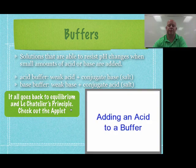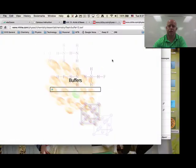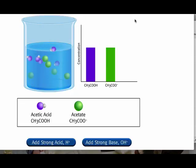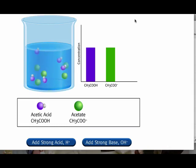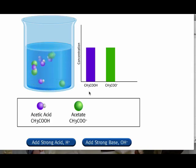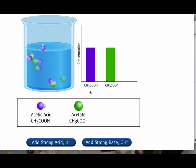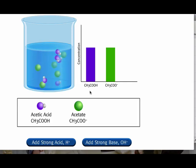Now we're going to look at an applet that brings us back to the Le Chatelier principle and how this all works. A buffer is an aqueous solution containing both a weak acid and a weak base that are a conjugate acid-base pair. The buffer shown contains the weak acid acetic acid and its conjugate base acetate, dissolved in water. Water molecules are not shown to draw focus to the buffer components. A buffer solution resists changes in pH upon addition of small amounts of acid or base.